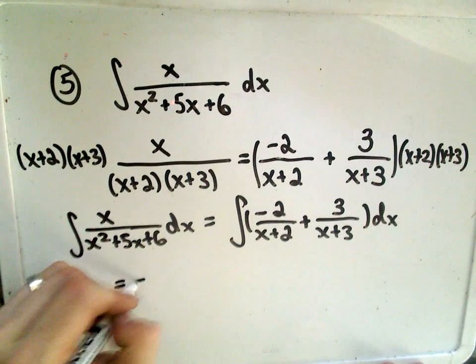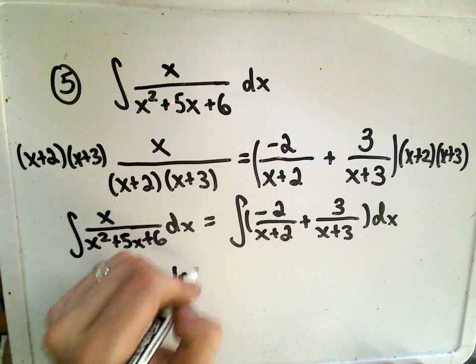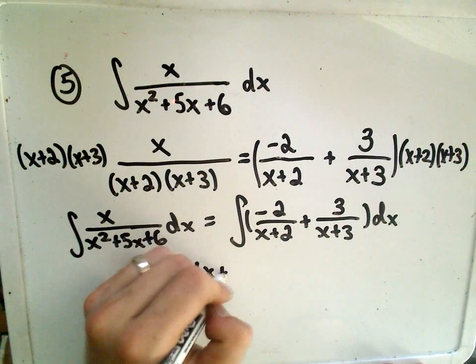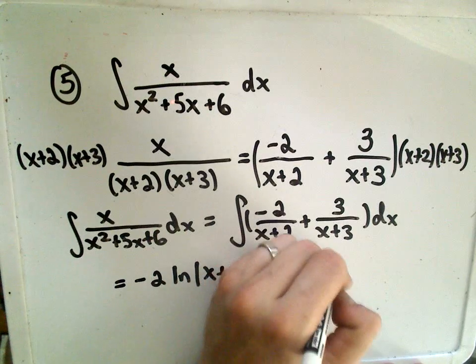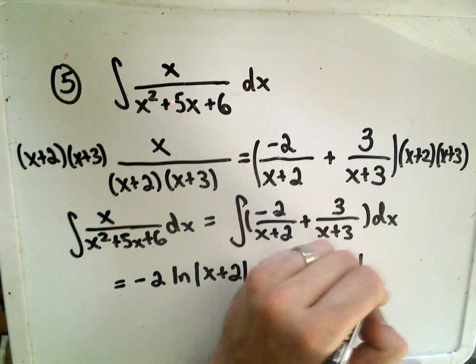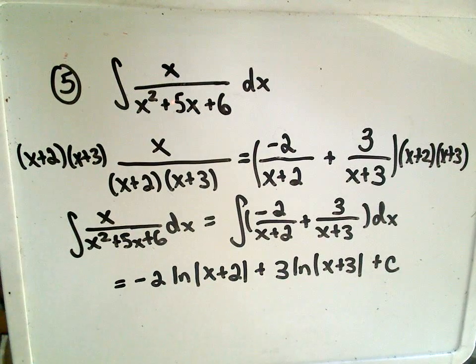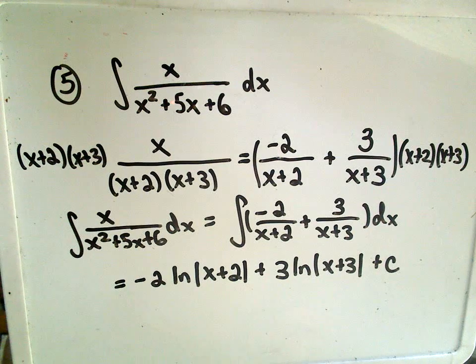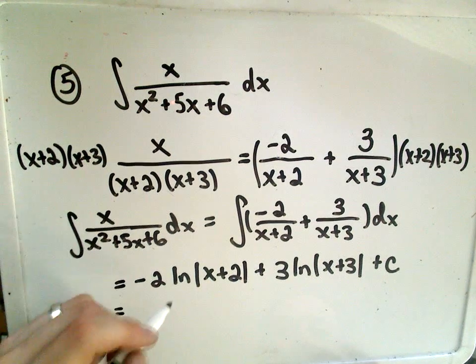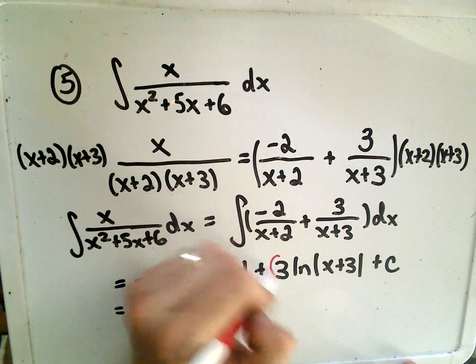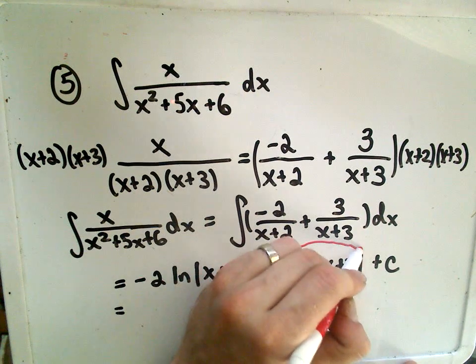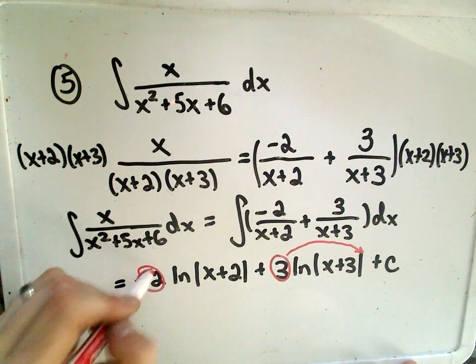If we integrate this, we'll simply get negative 2, the natural logarithm of the absolute value x plus 2, plus 3 times the natural logarithm of x plus 3 plus c. So here we're going to use our properties of logarithms as well. Remember our coefficients can go upstairs as exponents, so whatever the coefficient is, we can put that up as a power.